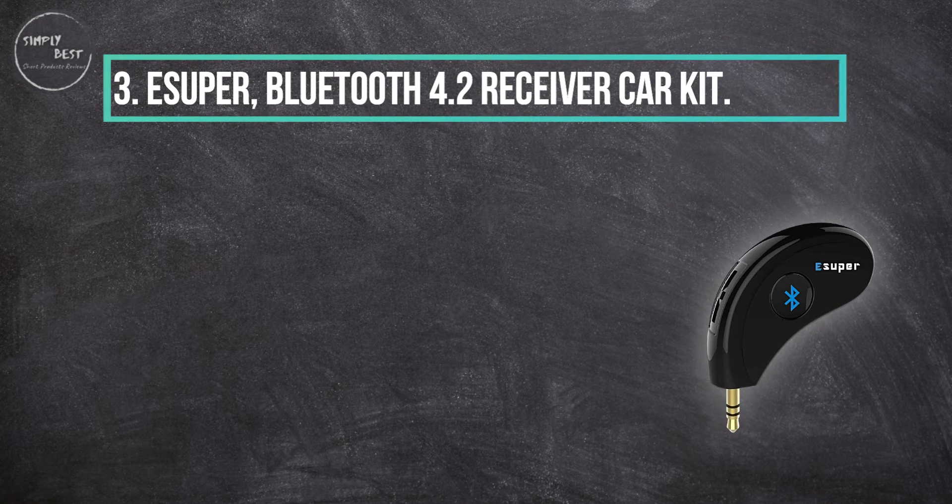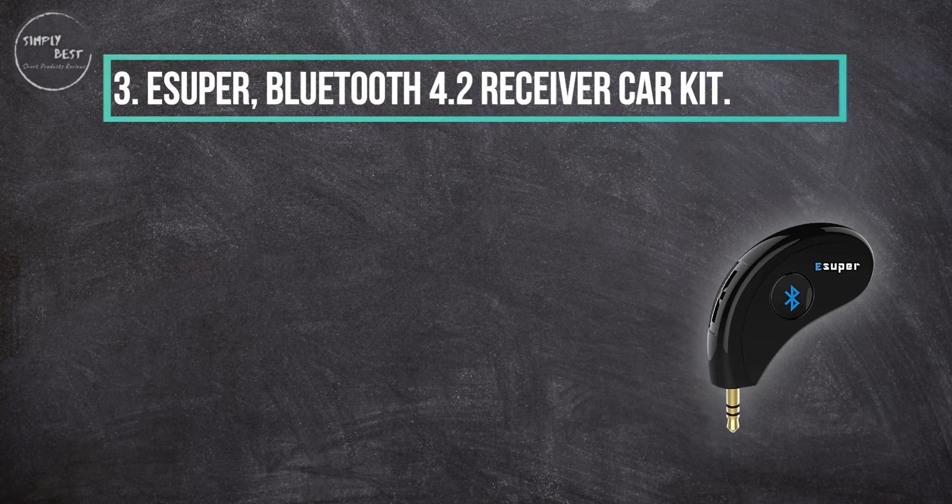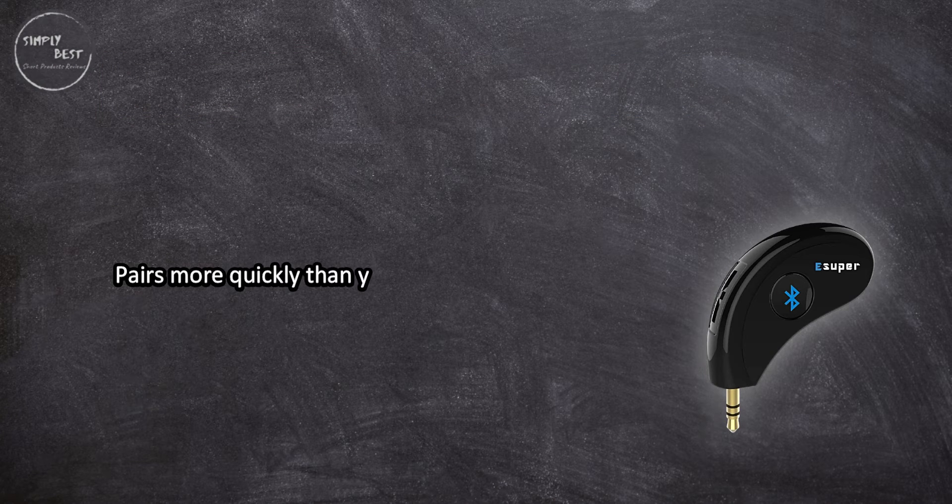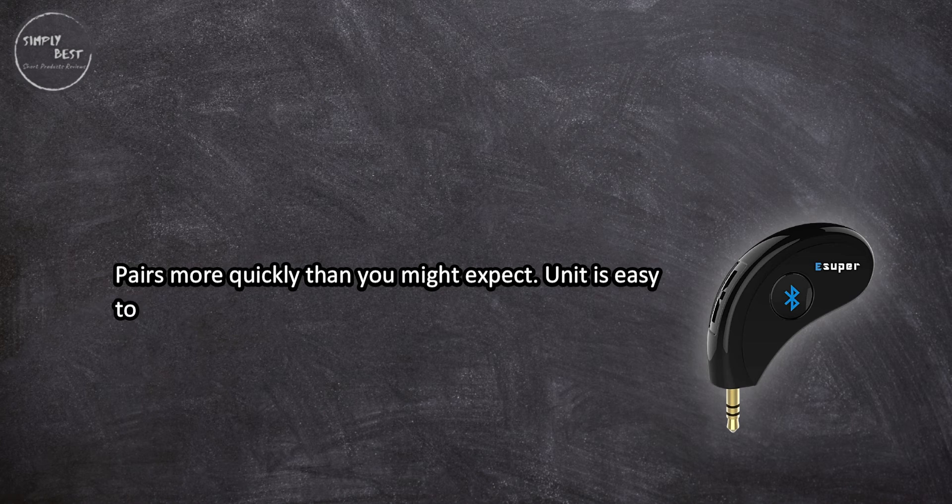At number three, E Super Bluetooth 4.2 receiver car kit pairs more quickly than you might expect. Unit is easy to use right out of the box.